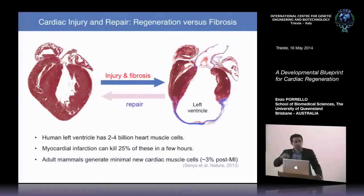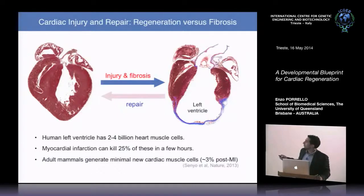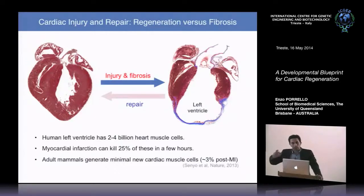In the absence of an appreciable regenerative response, the adult mammalian heart undergoes important pathological remodelling events, including replacement of lost cardiomyocytes with non-contractile scar tissue and pathological enlargement of the remaining viable myocardium. These remodelling events ultimately drive the heart towards contractile failure and dysfunction.